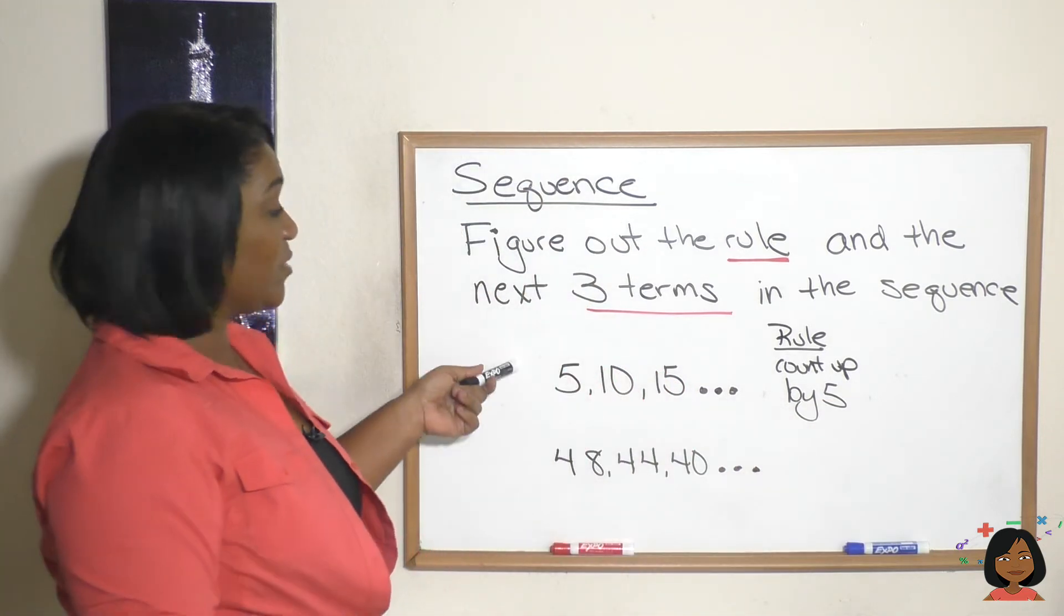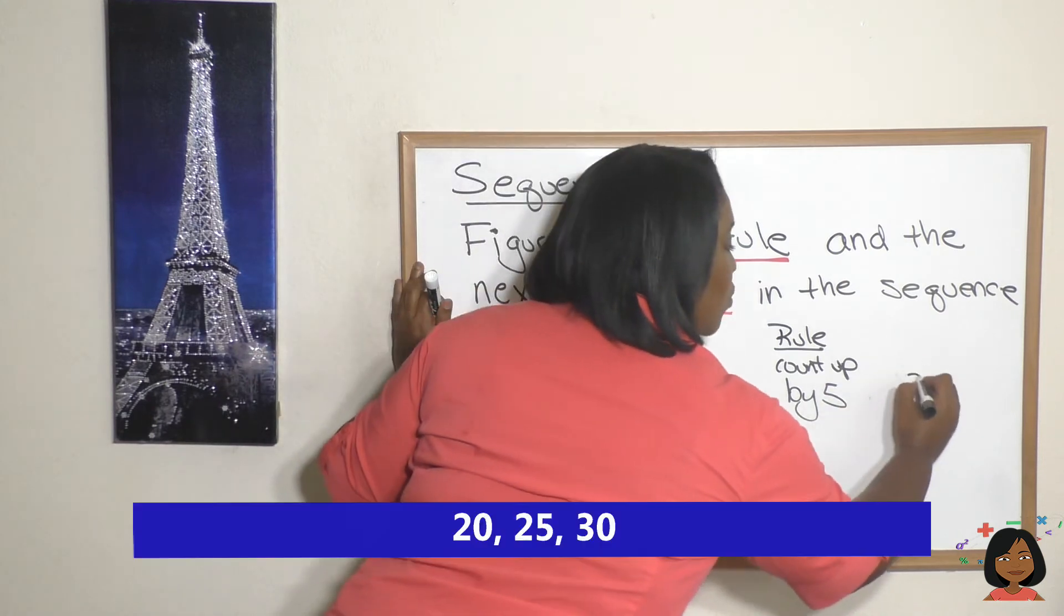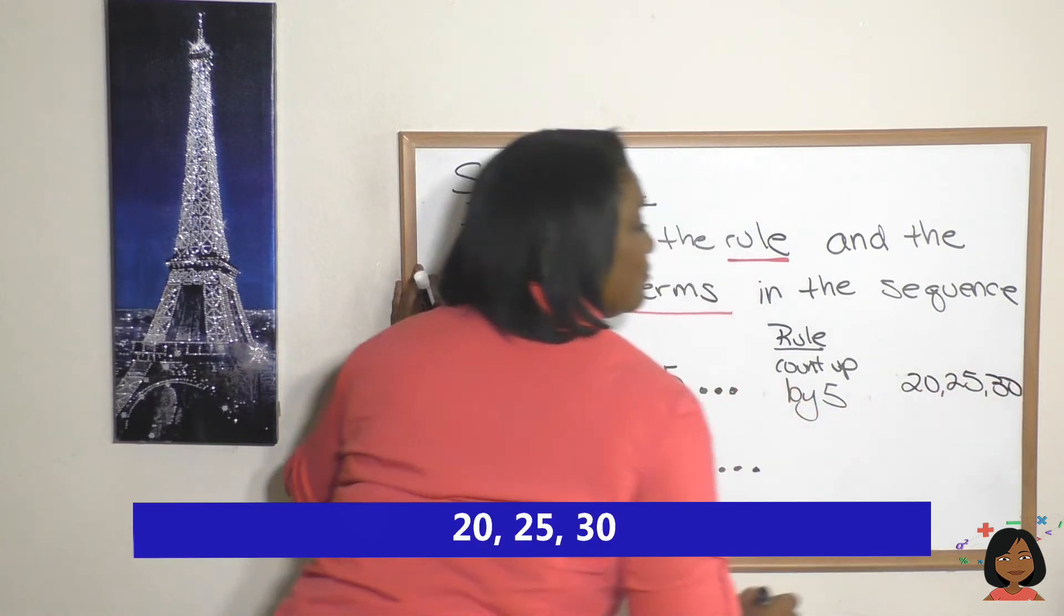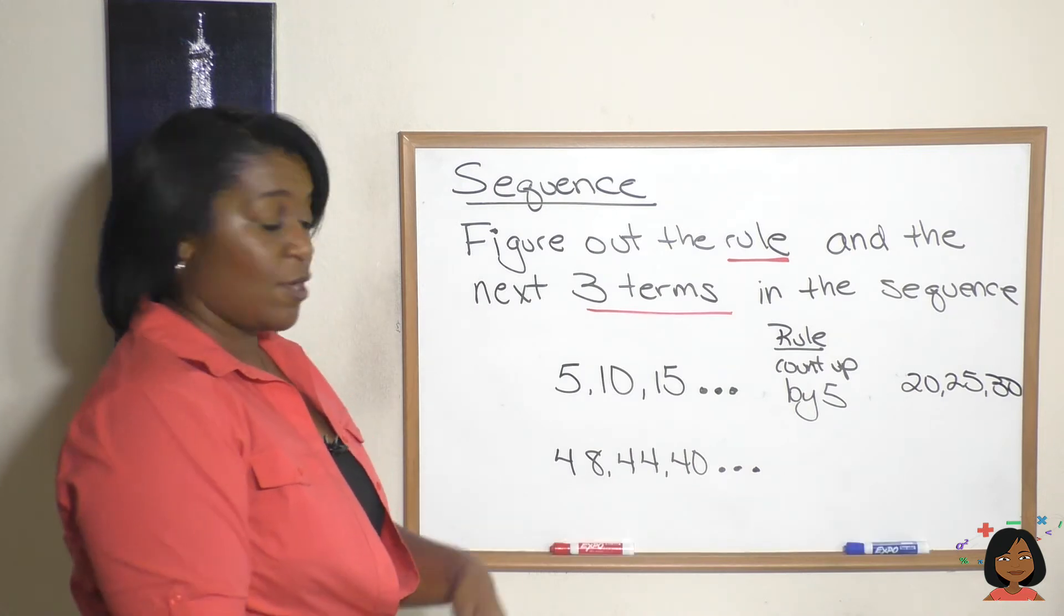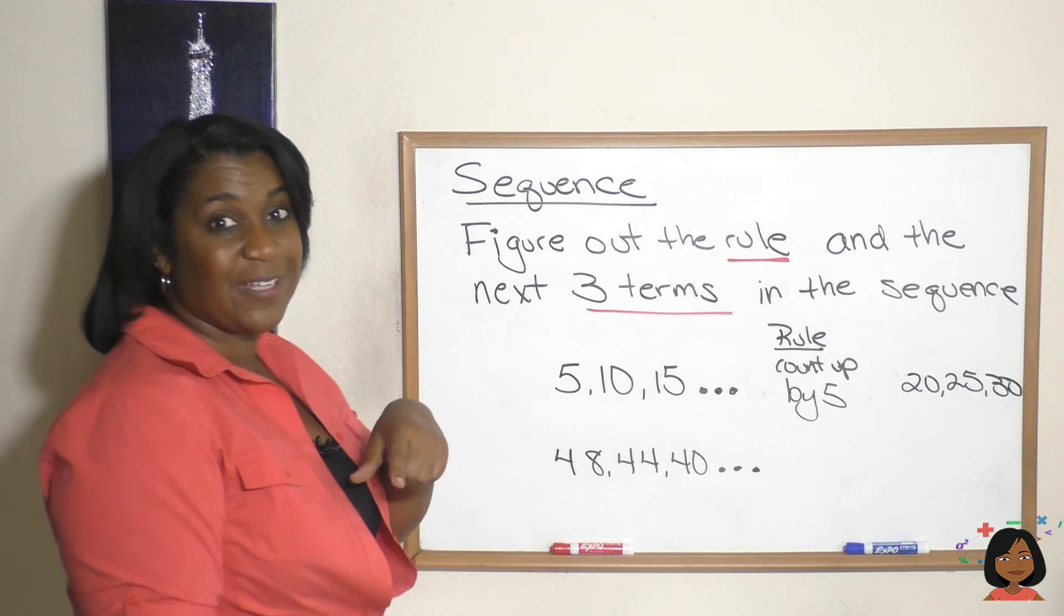And then what are the next three terms in our sequence? So we're at 5, 10, 15, we're gonna have 20, 25, and 30. All right, what about this one? 48, 44, 40. Well we definitely know that we are counting down but by how much?